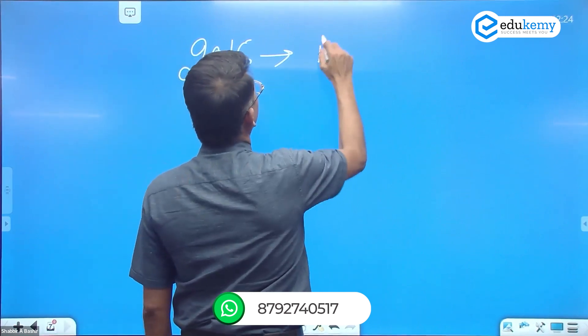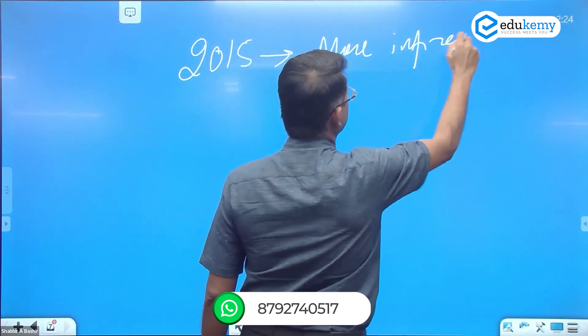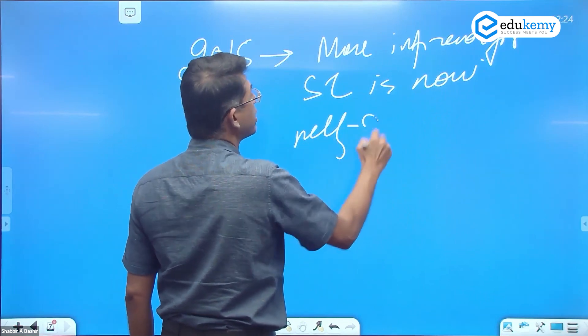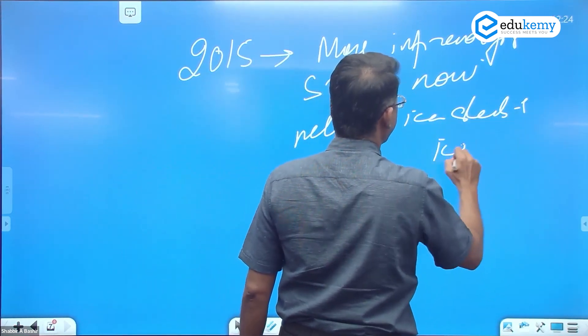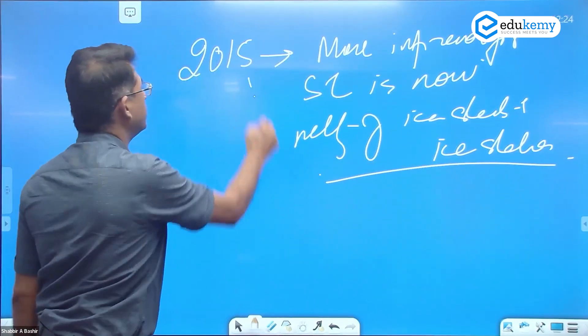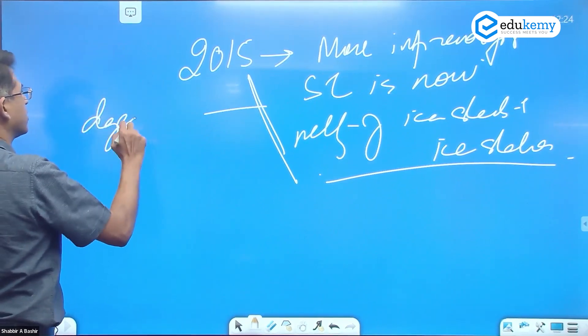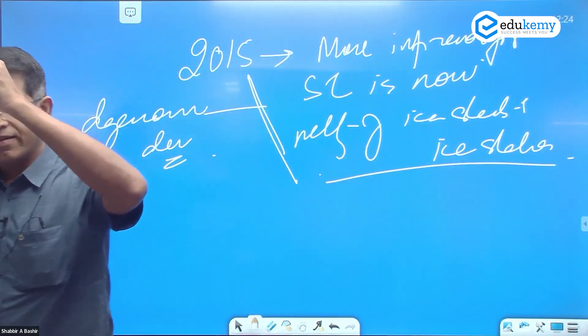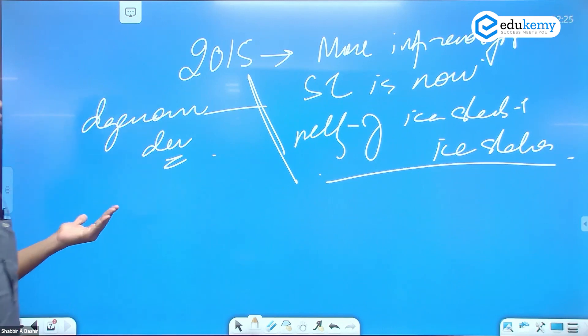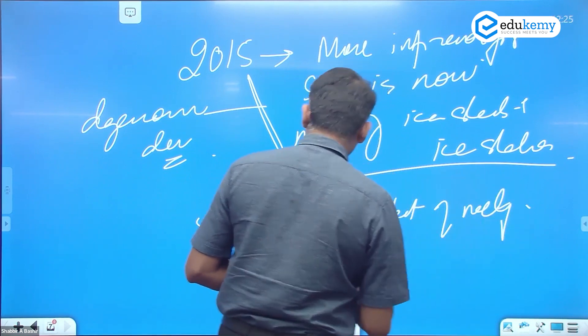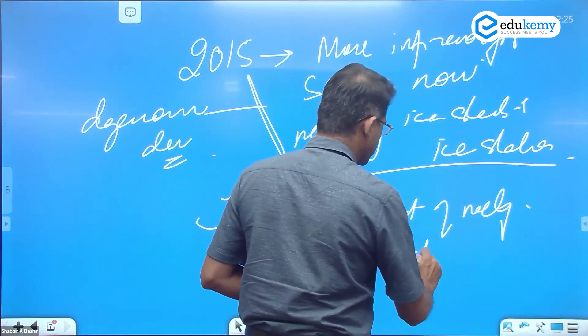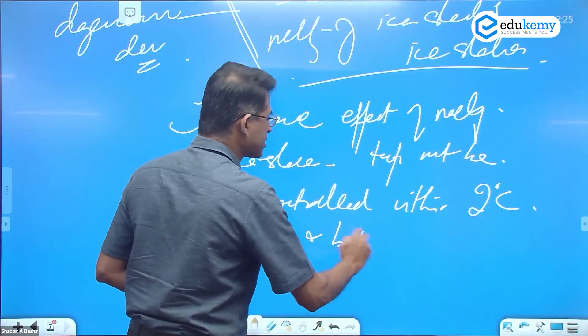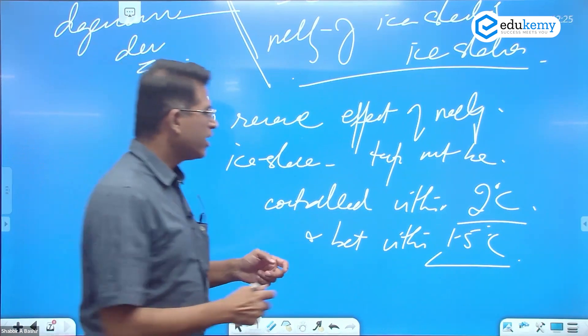What's happened is the more important reason for sea level rise is now the melting of ice sheets and ice shelves. This has become the more dangerous development. Or isko agar reverse karna hai, we have to maintain temperatures within 1.5. To reverse the effect of melting ice shelves, temperatures must be controlled within 2 degrees centigrade and best within 1.5.